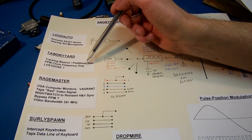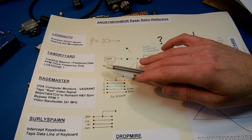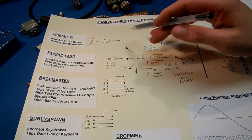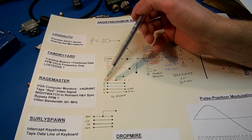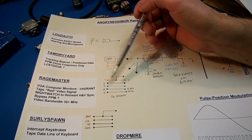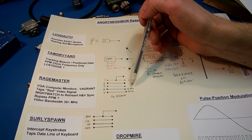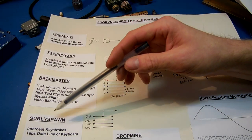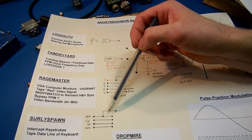I'll describe the actual modulator after I get done going through these. Next is the Tawdry Yard, this is just a tracking beacon, positional data. This is just the clock frequency of the modulator. The RageMaster is for VGA computer monitors, or VGA series computer monitors. It just taps the red line. It's really small. It just taps the data line, PS2 or USB keyboard.